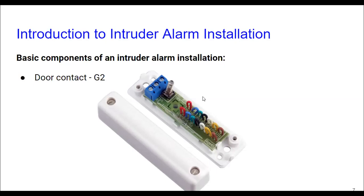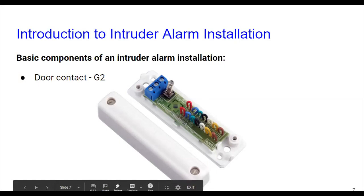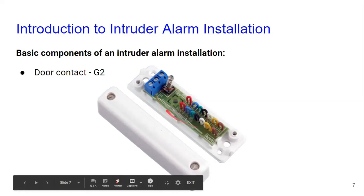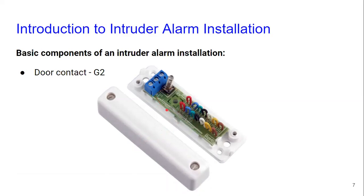A door contact has a relay that looks like a glass fuse. The relay opens when you open the door because it's magnetized — when the magnet is right next to the relay, the relay is always closed, forming a normally closed circuit. When you open the door, you take the magnet away from the door contact and the relay opens. It also has a spring which monitors the tamper — if someone tries to take the closer out, it monitors that tamper.